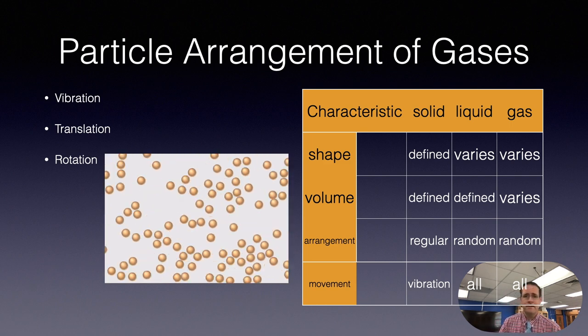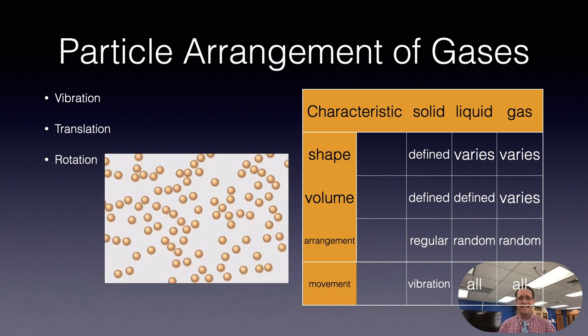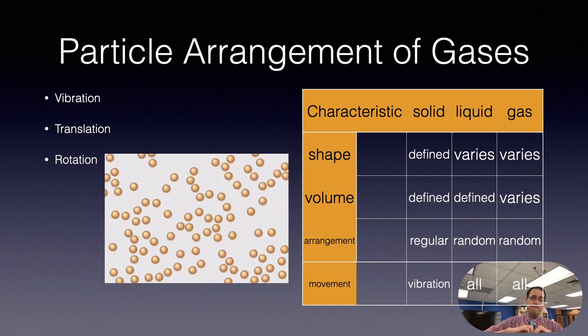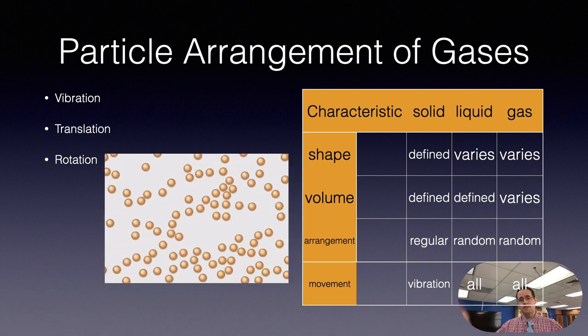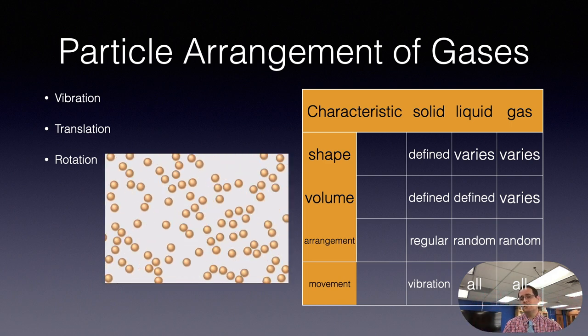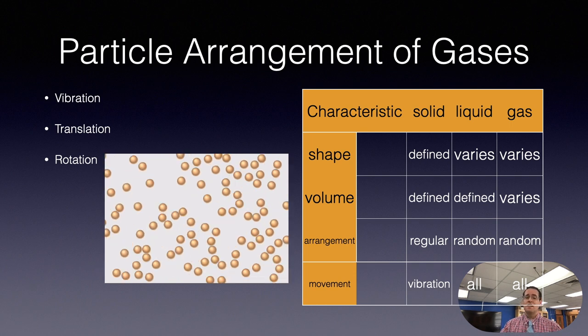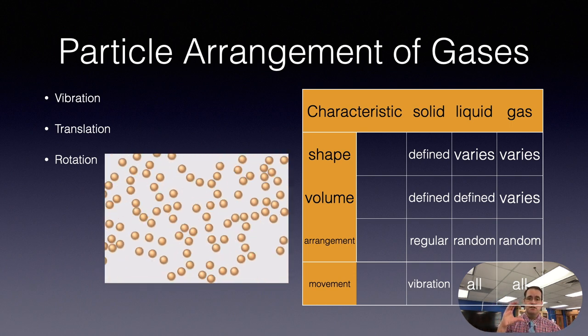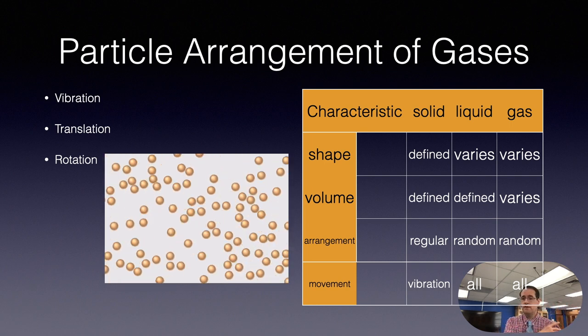And finally, we have gases. Gases are a very chaotic form of matter. Molecules or atoms are moving very quickly, bouncing off the container walls. And again, this animation shows that you have mostly empty space. And there's all types of movement. There's vibration, there's rotation, and then there's translation.